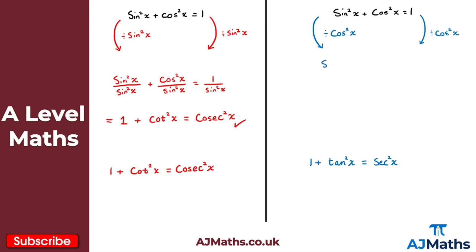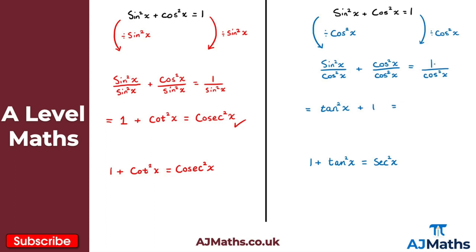Dividing through by cos²x, we get sin²x over cos²x, plus cos²x over cos²x, equals 1 over cos²x. Simplifying: sin²x over cos²x is tan²x, and cos²x over cos²x is 1, giving us plus 1. Finally, 1 over cos²x is another reciprocal trig function — that's sec²x.